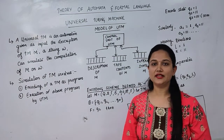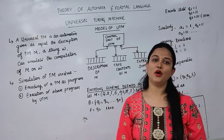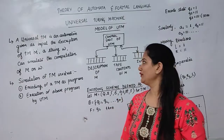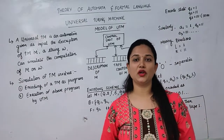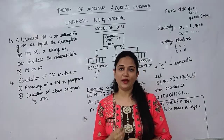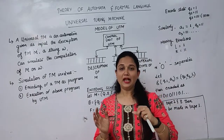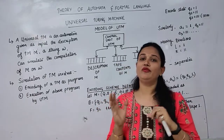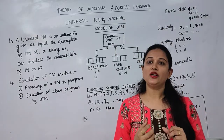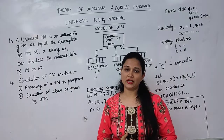Hello everyone. In this video let's discuss about universal Turing machine in automata. Universal Turing machine is a kind of automata in which we give as input a Turing machine as well as a string W, and we try to find out whether this W is accepted or not accepted by the given Turing machine.